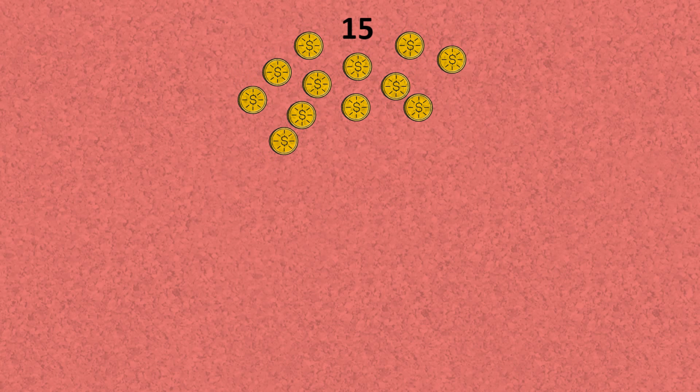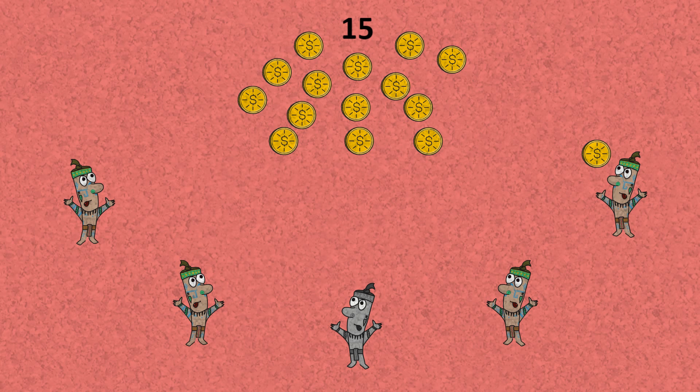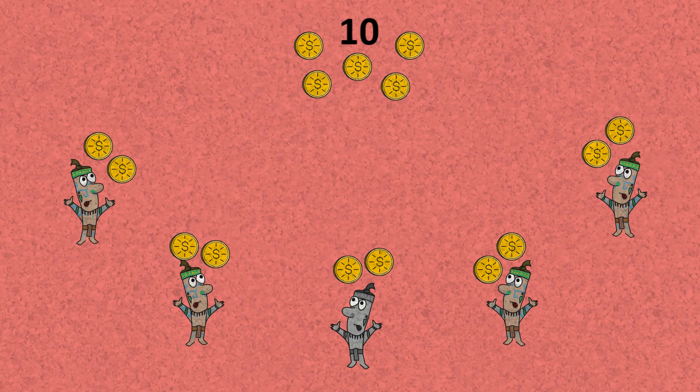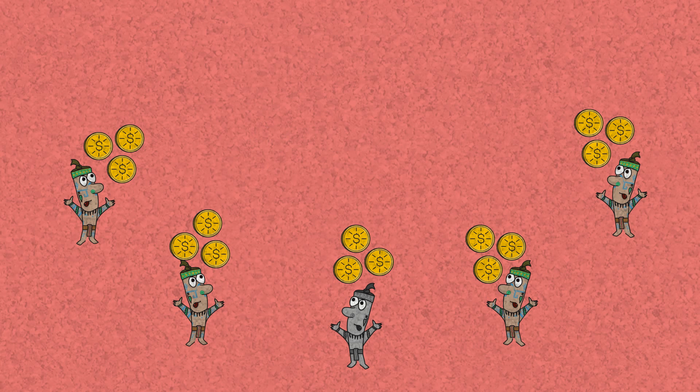We had 15 coins and we gave each person one coin. In other words, we subtracted five, and then we subtracted another five and another five. So here's what it looks like.